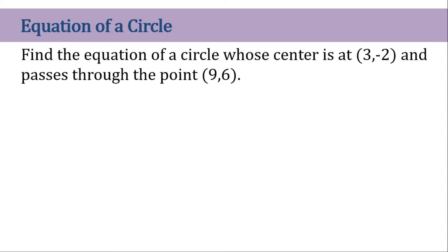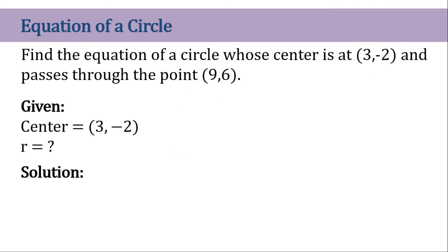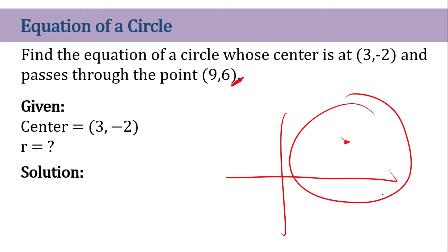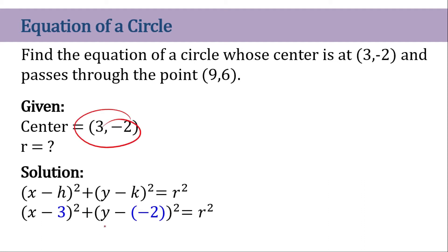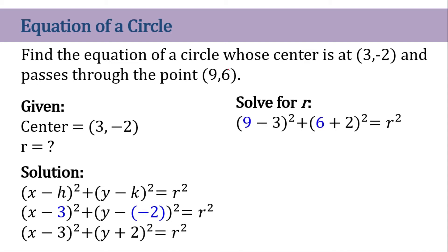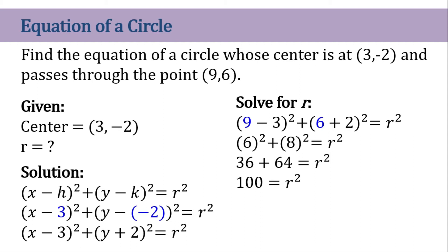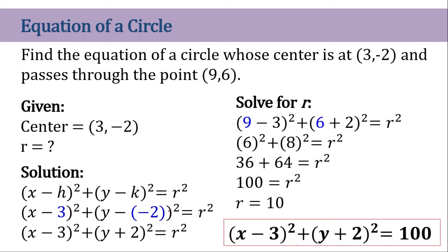Now this one is a different kind of question. Find the equation of the circle whose center is at (3,-2) and passes through point (9,6). As you can see, there is no radius given, but there is a certain point where the circle passes. So to get the radius, we need to find the distance between these two points. We substitute the center and the point on the circle into the formula. 9 minus 3 is 6, 6 plus 2 is 8. So we have 6 squared plus 8 squared: 36 plus 64 equals 100. So r squared equals 100, meaning r equals 10 units. Now we can write the equation of the circle with r equal to 10.